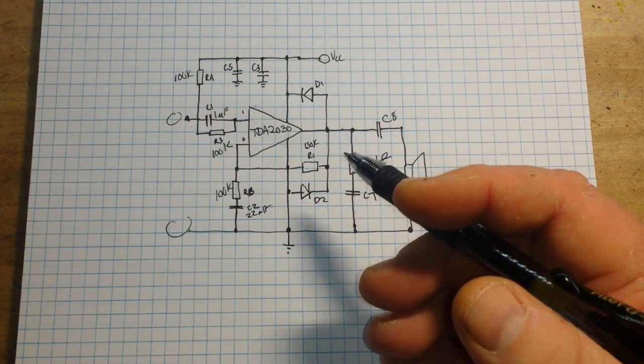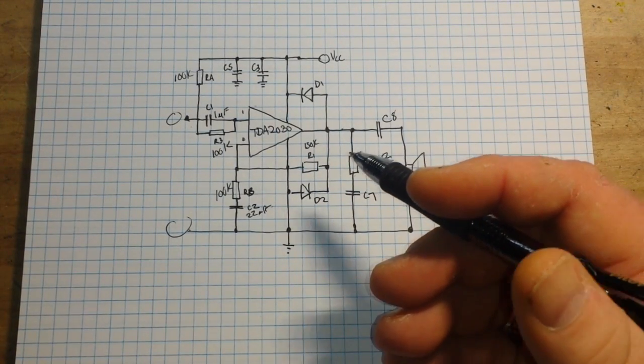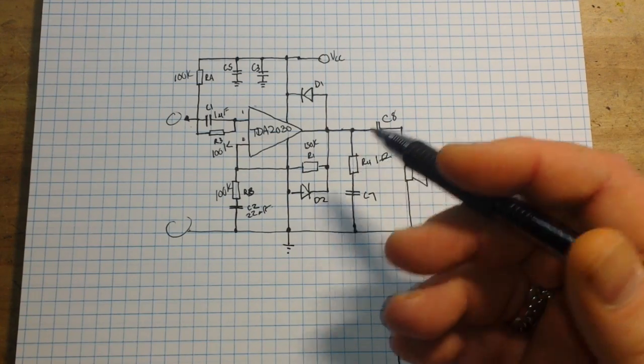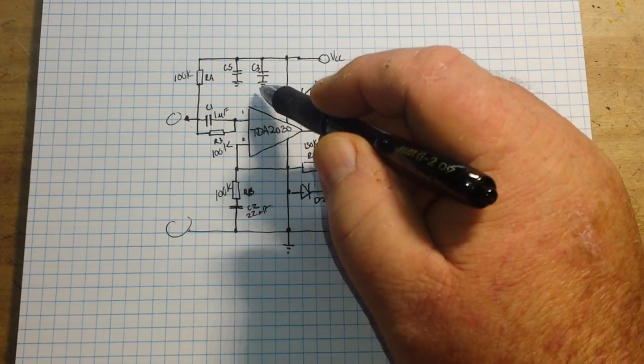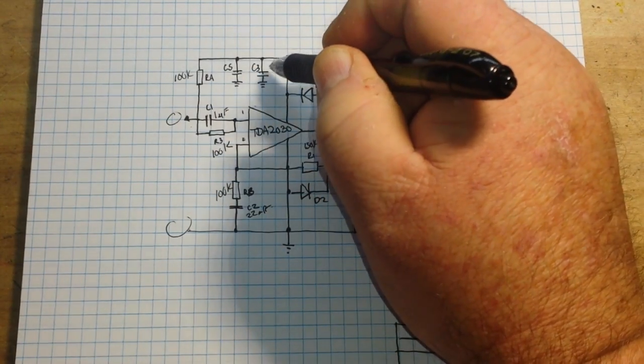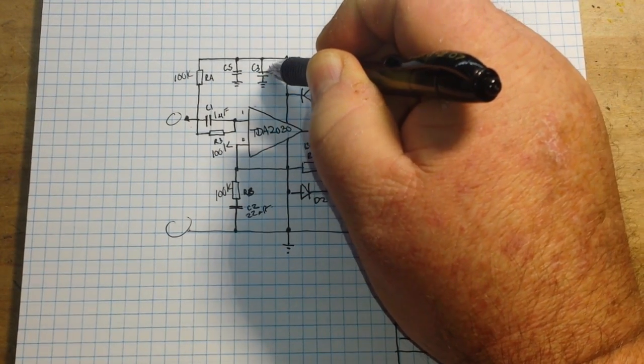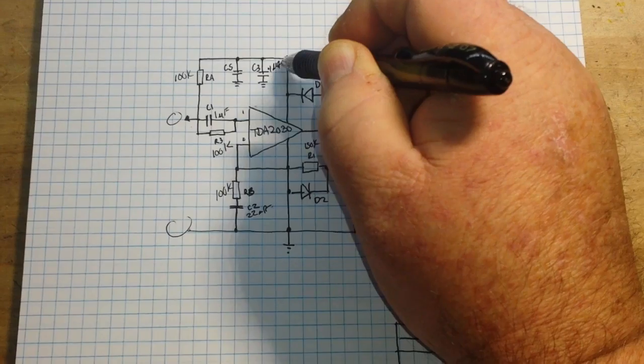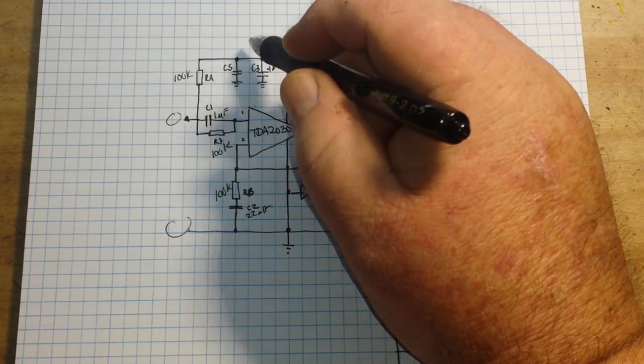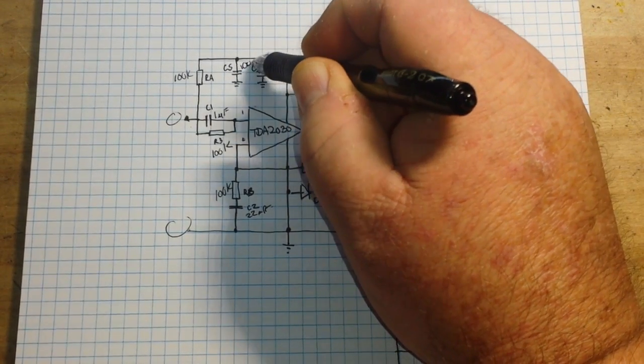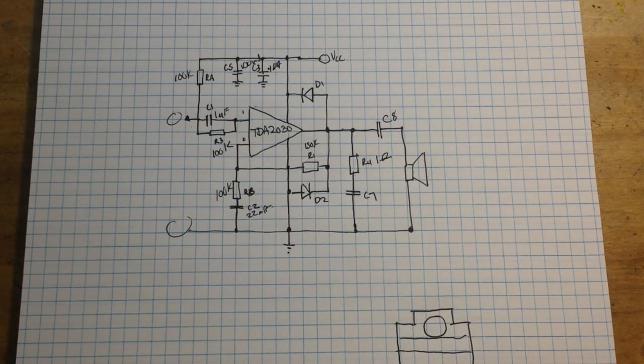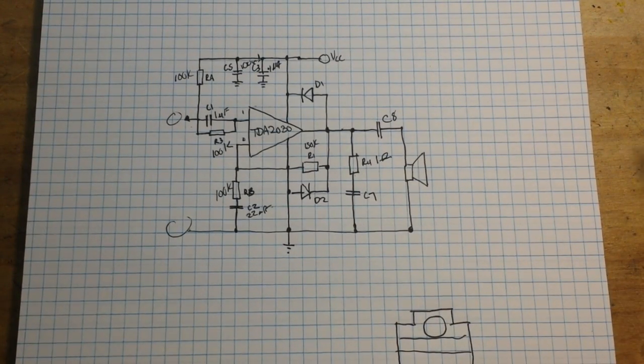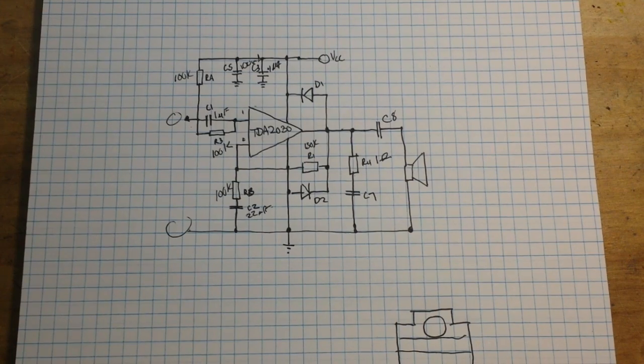C3 and C5 are 0.1 and 100 microfarad. Now you've seen those numbers a lot of times, you know exactly what they mean. Those are our supply voltage bypasses.